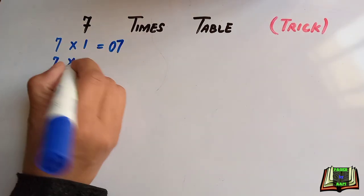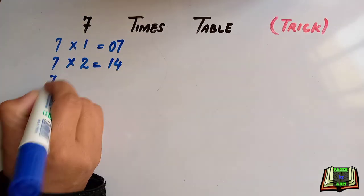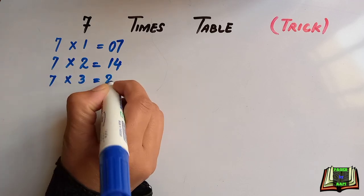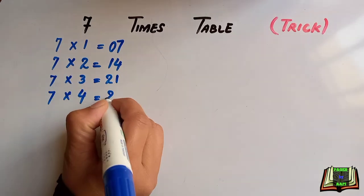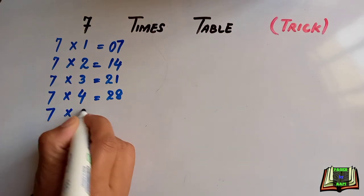7 times 1 is 7. 7 times 2 is 14. 7 times 3 is 21. 7 times 4 is 28.